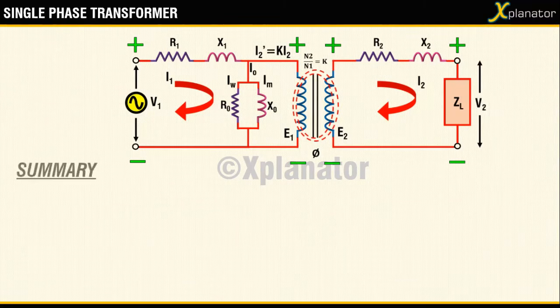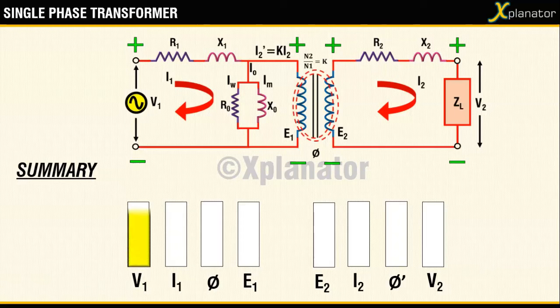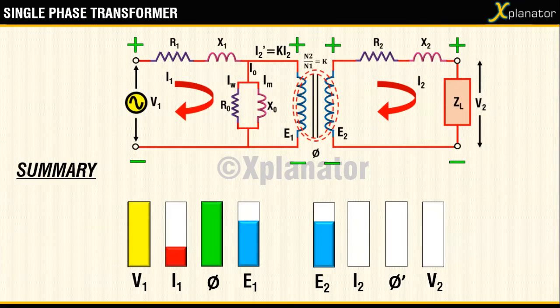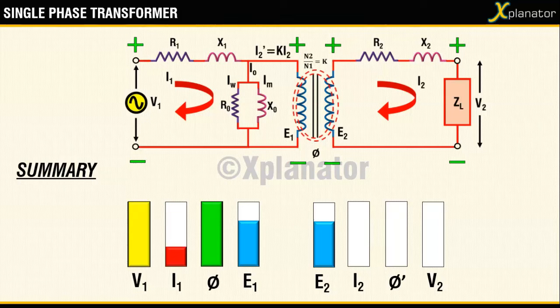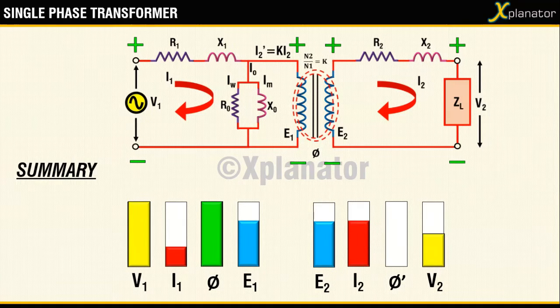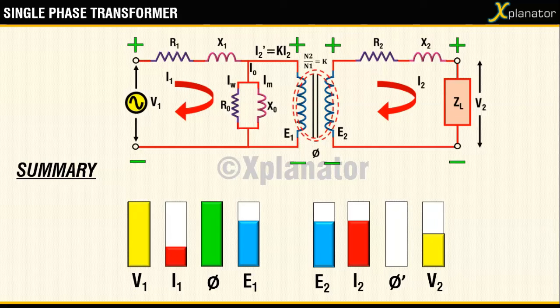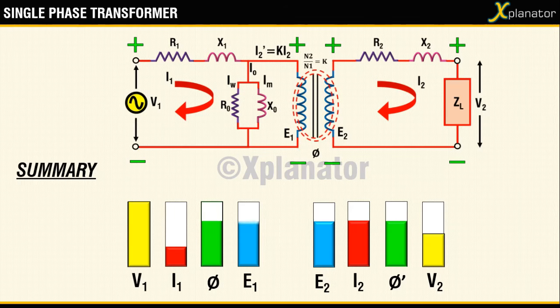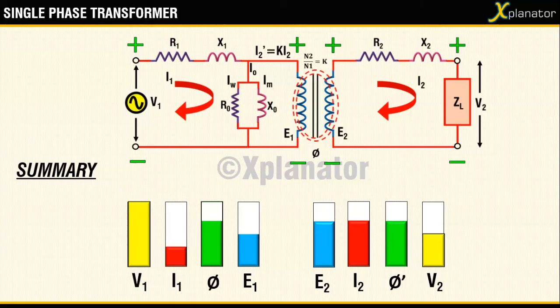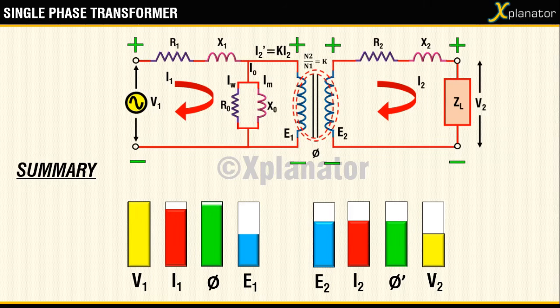To summarize the working, when supply voltage V1 is connected a small current I1 flows to magnetize the core and create a flux phi. The changing flux phi gives rise to induced emfs E1 and E2 on both sides of the circuit, that is primary and secondary. The secondary emf E2 circulates I2 in the closed circuit. Presence of I2 leads to phi prime which counters phi. A reduced phi leads to a reduced E1 which means there is a larger potential difference between V1 and E1. So I1 increases. Increased I1 means increased phi and so the value of the flux phi is restored in the circuit.